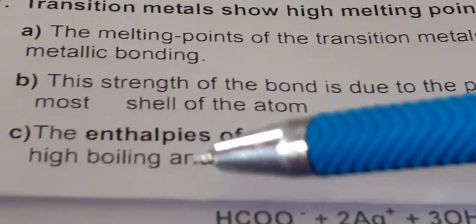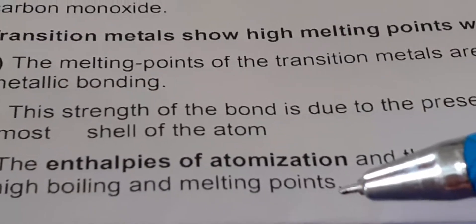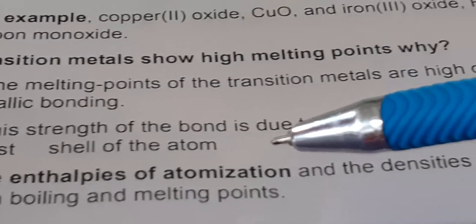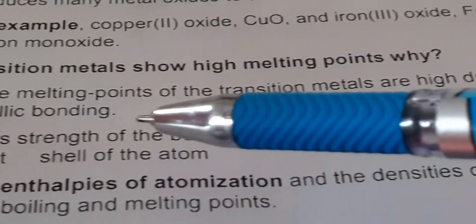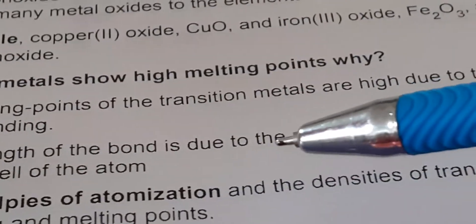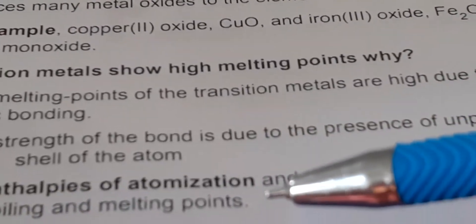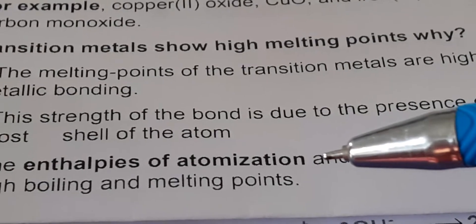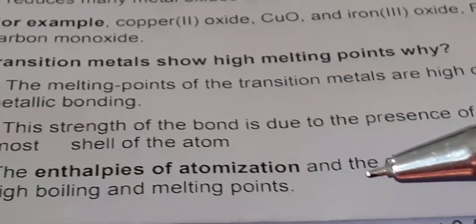These factors lead to high boiling points and melting points. To summarize: first, the D electrons are involved in metallic bonding; second, unpaired electrons are present; and third, the delocalization of electrons takes place in the outermost valence shell, and the enthalpy of atomization of transition metals is high.